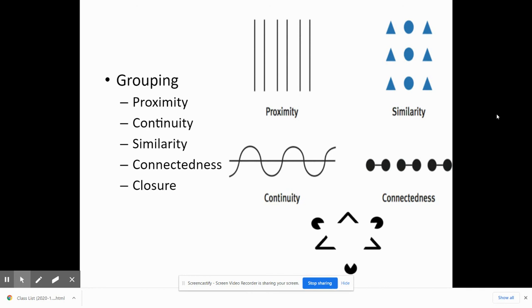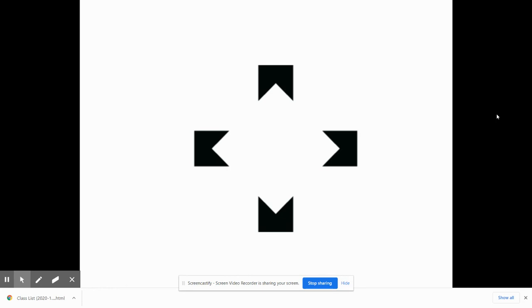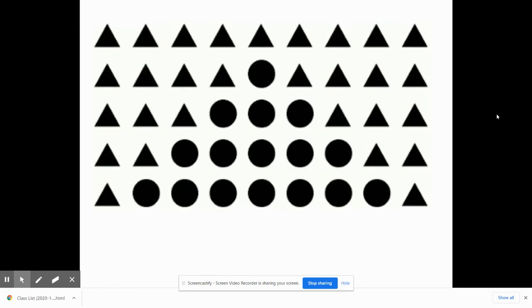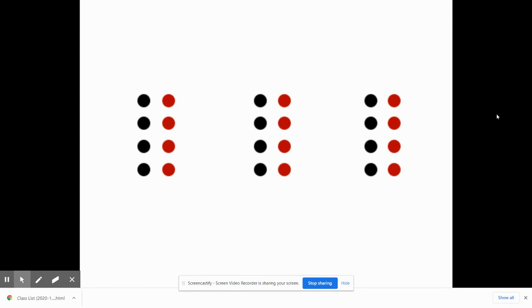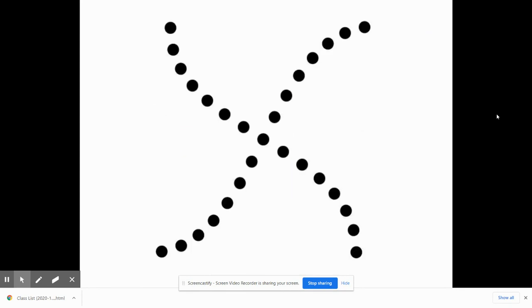And finally, closure is when we're given things, seeing an image like what's on the bottom here, and we mentally connect and group the areas that should feel closed to perceive shapes or images that aren't there. And here are some examples of additional Gestalt psychology. This would be closure. This would be similarity. Connectedness. Proximity. Continuity.